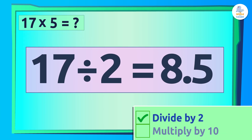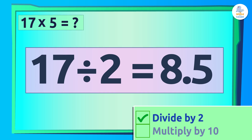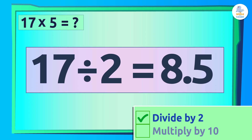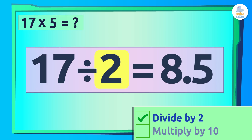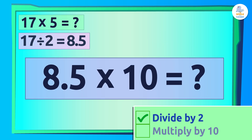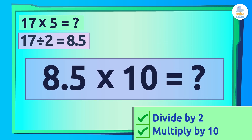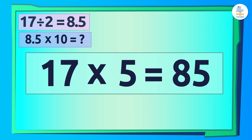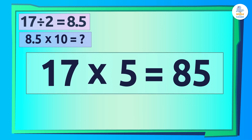We start by dividing our number by 2, like before. Since 17 is odd, we get a decimal number — 17 divided by 2 equals 8.5. Next, we multiply that number by 10. 8.5 times 10 is what? Great! 85!